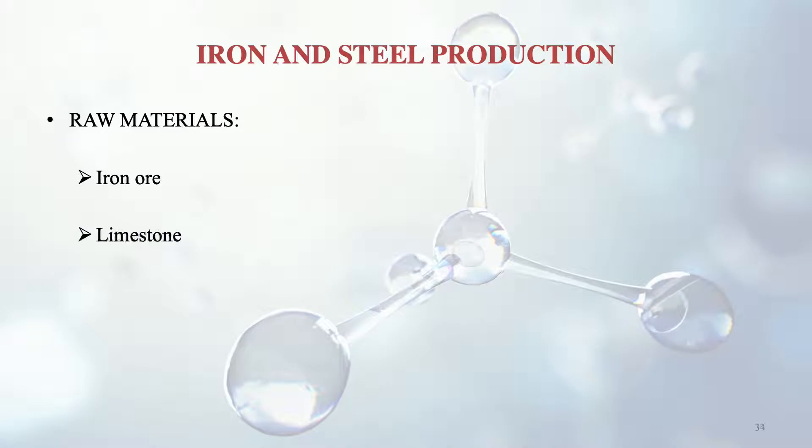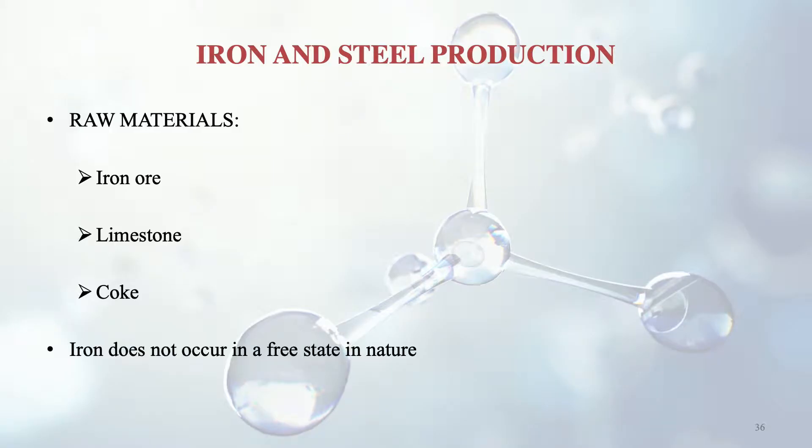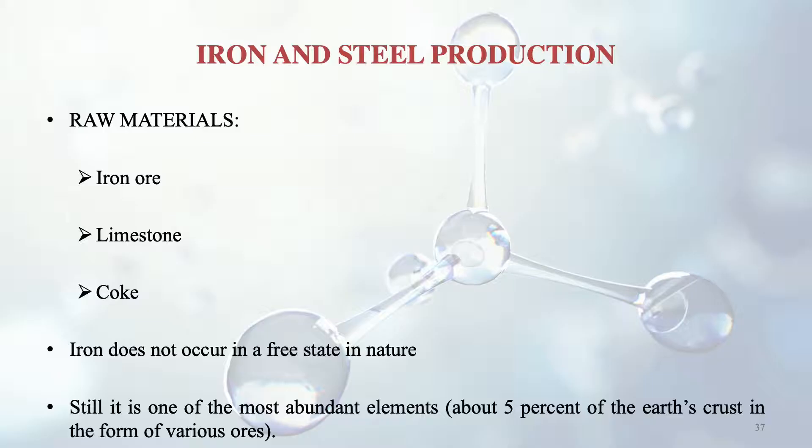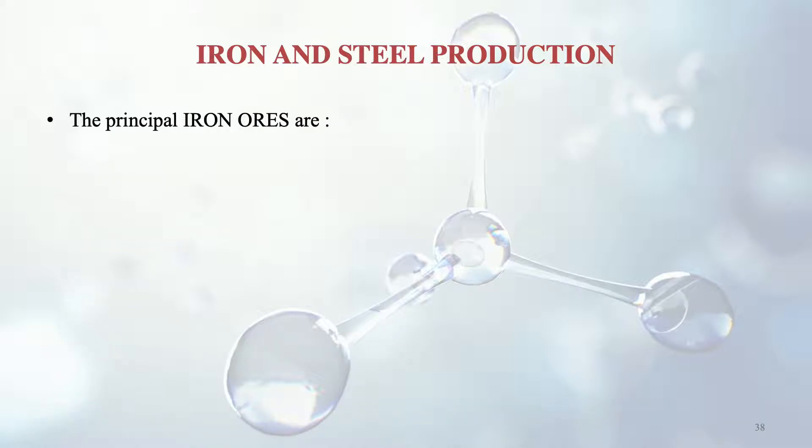Now we start with iron and steel production. The three basic raw materials required are: iron ore, limestone and coke. Iron does not occur in free state in nature — it occurs in the form of ores, though it is very abundant, comprising about 5% of the earth's crust in the form of various iron ores.